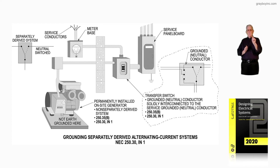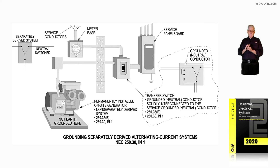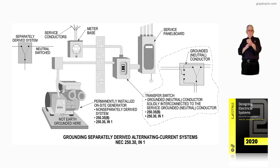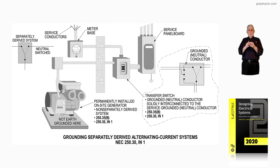But if the generator shown in this illustration is permanently installed, then under the transfer switch you have to look at 250.35A and B. Do you have an overcurrent device protecting the conductors at the generator ahead of the conductors routed over there, or under certain conditions permissible by the manufacturer, do you not have an overcurrent device at the generator? So you have to use 250.35A or B for a permanently installed generator. But 250.30 informational note 1 and 2 deals with classifying the generator as separately derived or non-separately derived. So 250.30 and 250.35 work together for separately derived or non-separately derived generators — and that's what this illustration is illustrating.